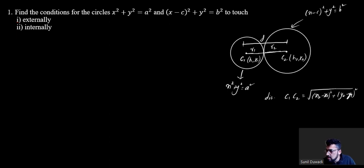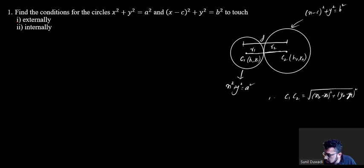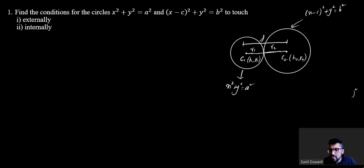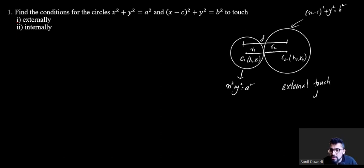When two circles touch externally, the distance between their centers equals the sum of their radii. That is, d is equal to R1 plus R2.